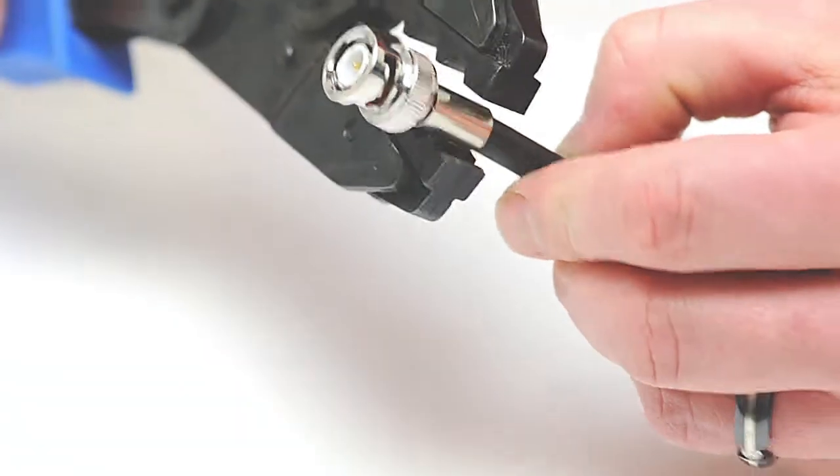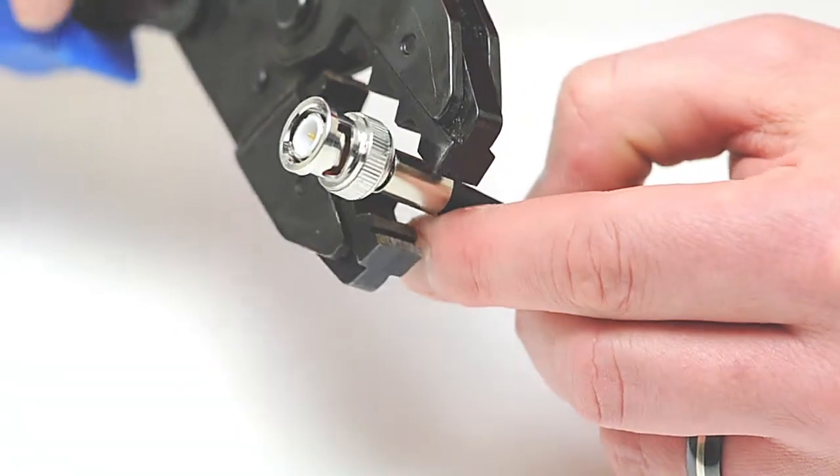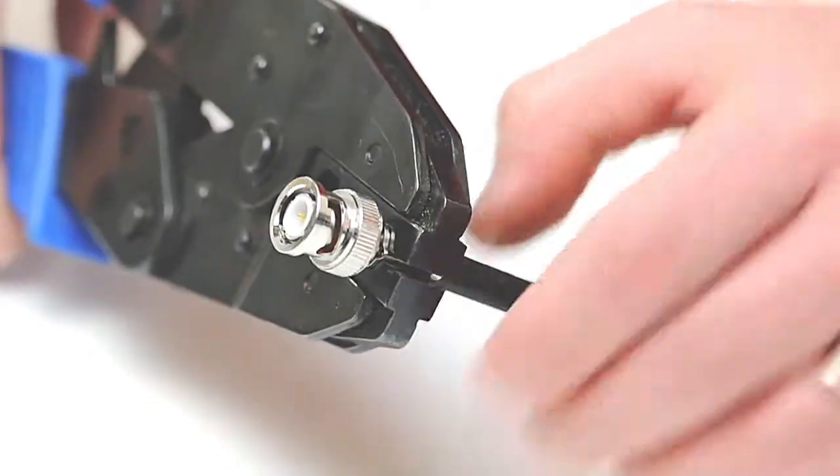Take your crimp tool and crimp the ferrule onto the jacket. This will create a secure connection.